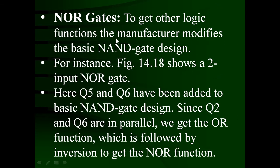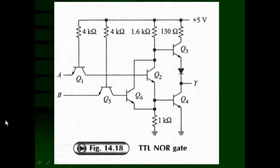To get other logic functions, the manufacturers modify the basic NAND gate design. For instance, transistors Q5 and Q6 have been added to the basic NAND gate design to form the NOR gate. Since Q2 and Q6 are in parallel, we get an OR function followed by inversion to get the NOR function. This is the circuitry of the two-input NOR gate.